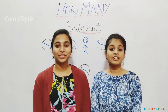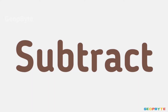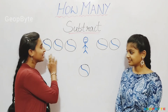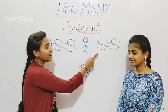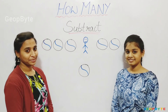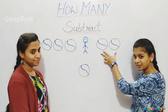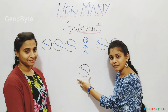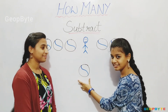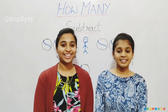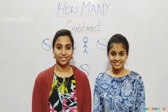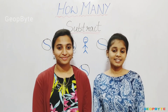Now let us get into the topic — subtract. Hey kids, see here. We have 3 balls. This boy takes away 2 balls for playing. How many balls are left? Only 1 ball. 3 balls minus 2 balls is equal to 1 ball. That is, 3 minus 2 is equal to 1. Hey kids, there is a small activity for you. Try to practice subtraction. Now we have completely understood the topic — subtract.